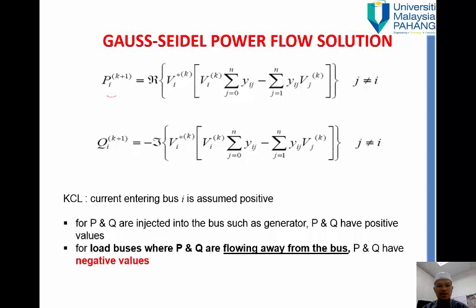In order to obtain the Pi for the next iteration we take the real value of these expressions, and for reactive power we take the minus imaginary value of these expressions.